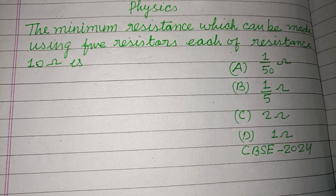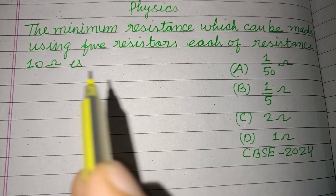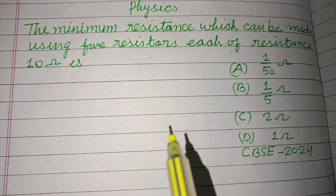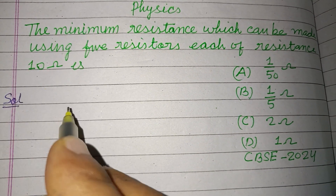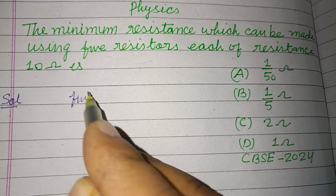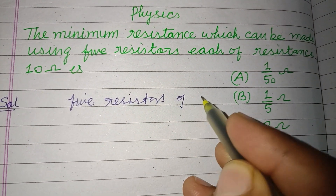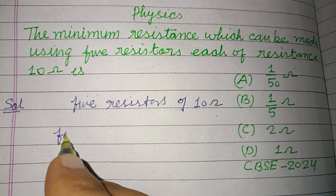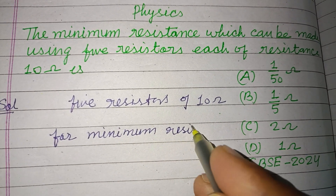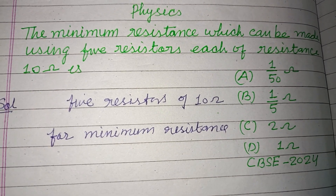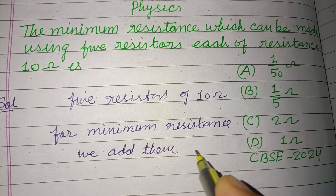Hello viewers, welcome to this YouTube channel. This is a question from the CBSE board exam 2024, class 10. The minimum resistance which can be made using 5 resistors each of 10 ohm. For minimum equivalent resistance, we add them in parallel combination.